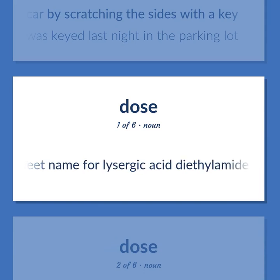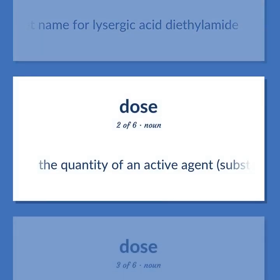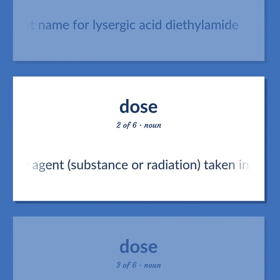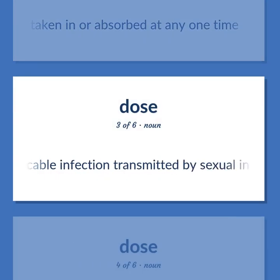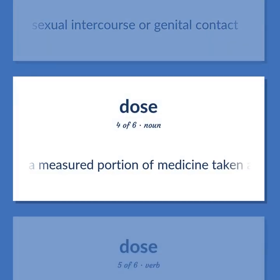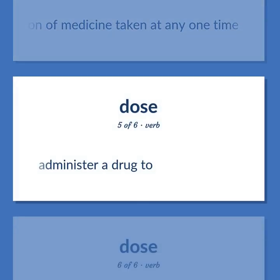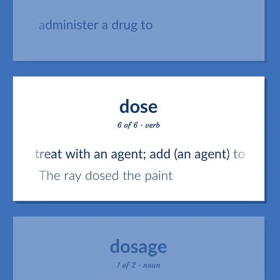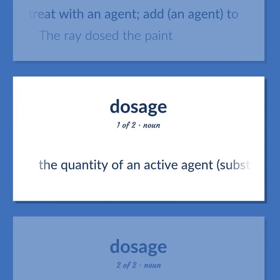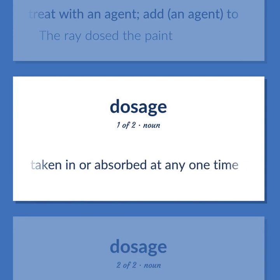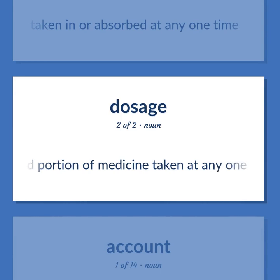DOSE: Street name for lysergic acid diethylamide. The quantity of an active agent, substance or radiation, taken in or absorbed at any one time. A communicable infection transmitted by sexual intercourse or genital contact. A measured portion of medicine taken at any one time. Administer a drug to; treat with an agent; add an agent to. Example: The ray dosed the paint. The quantity of an active agent, substance or radiation, taken in or absorbed at any one time. A measured portion of medicine taken at any one time.